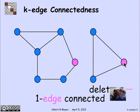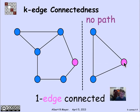In particular, if I delete that edge, then there no longer is a path between the two magenta vertices.